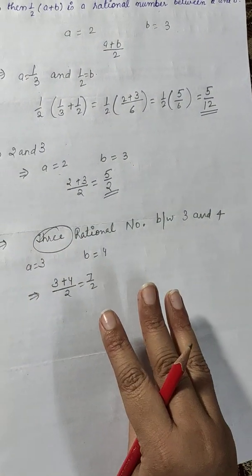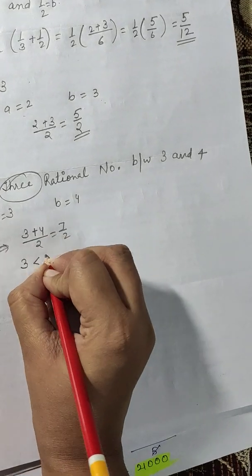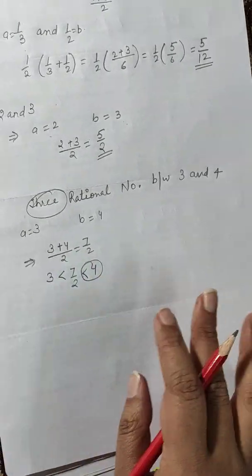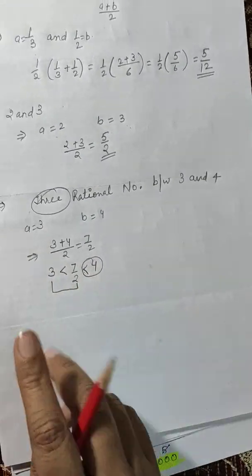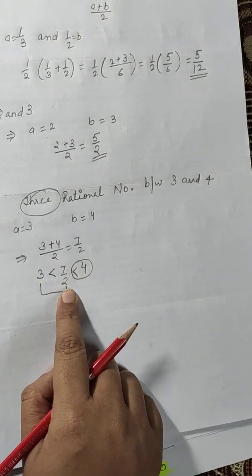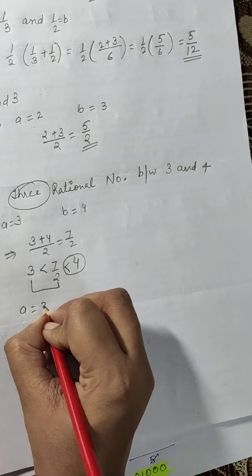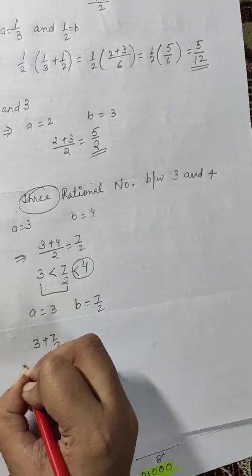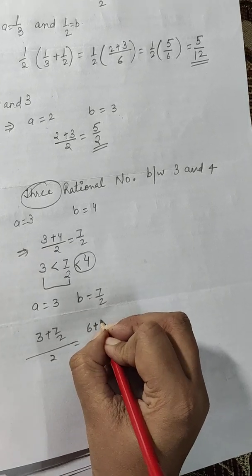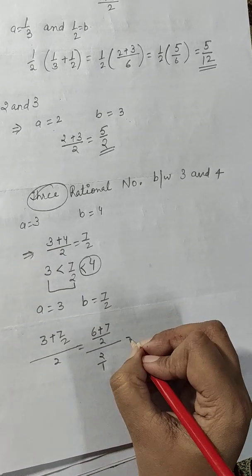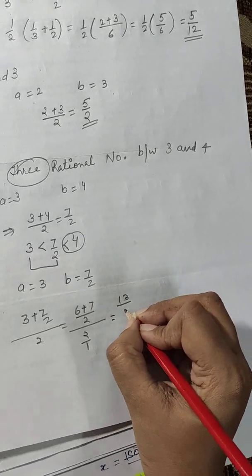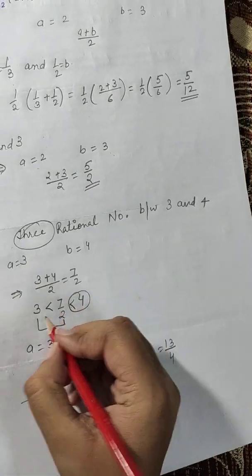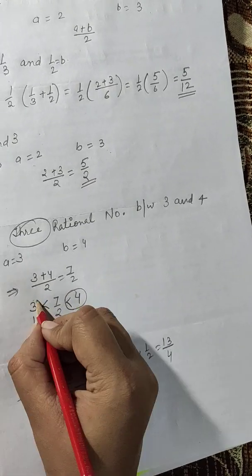To find more, we ignore 4 and find a rational number between 3 and 7/2. So a equals 3 and b equals 7/2. Computing: (3 + 7/2) / 2 — taking LCM gives (6 + 7) / 2 divided by 2, which equals 13/2 × 1/2 = 13/4.